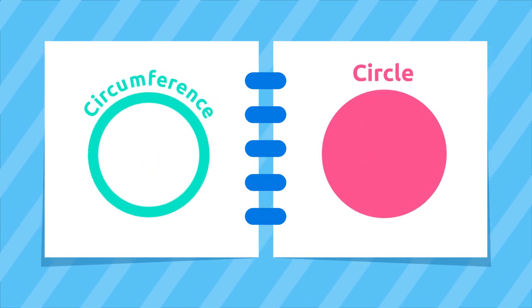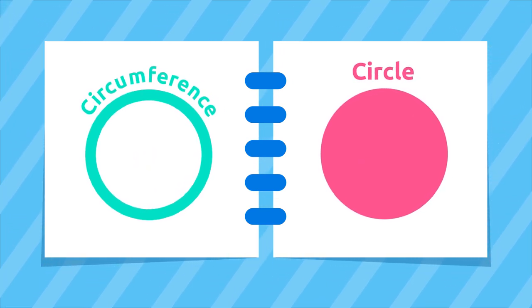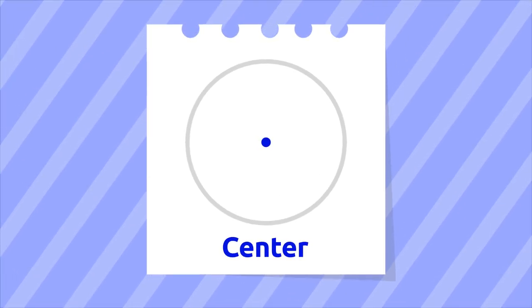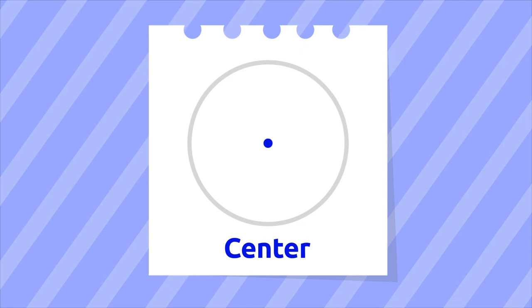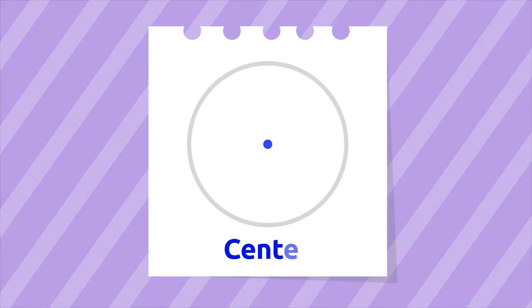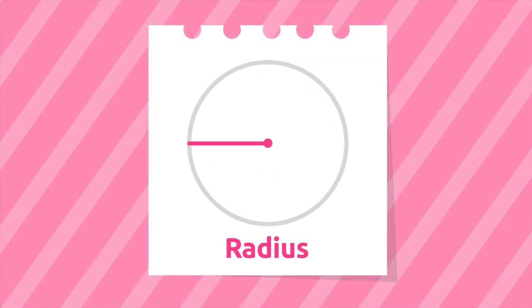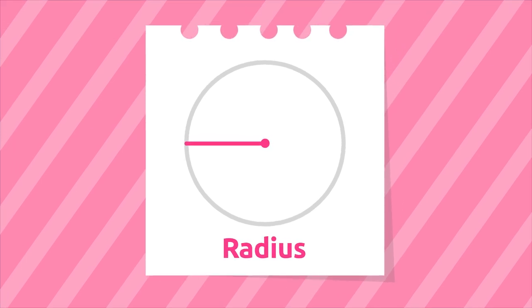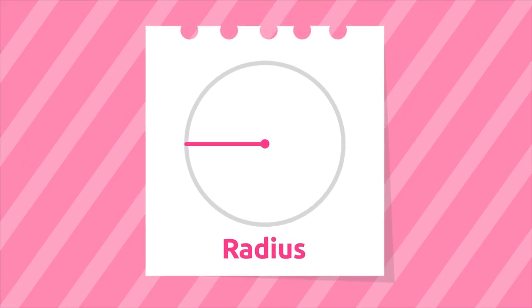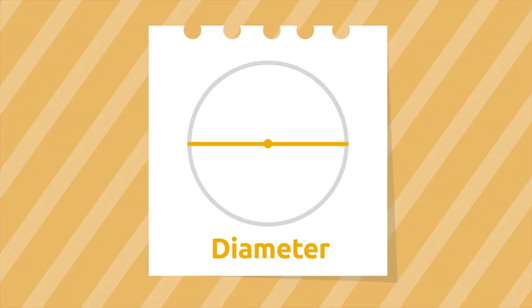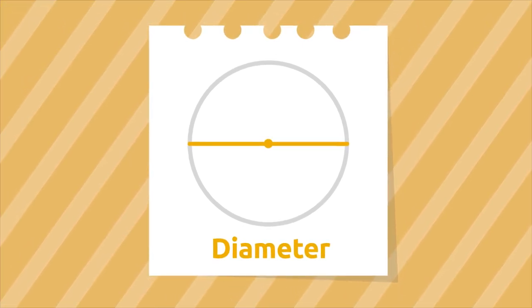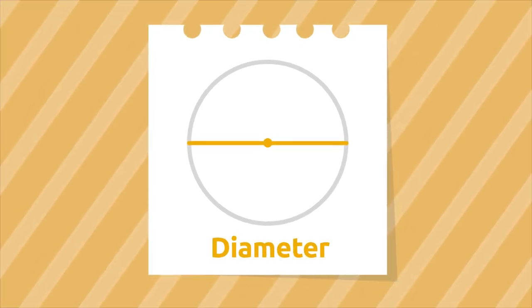We can distinguish the following elements in a circumference and a circle. The center is the point from which all the points of the circumference are the same distance. The radius is a segment which connects the center with any point of the circumference.